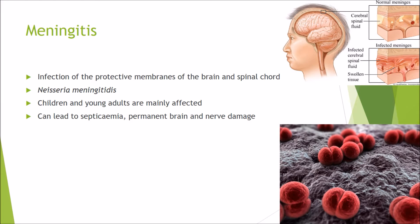This disease often affects children and young adults because their immune systems are still not fully developed and matured, making them more prone to infections. Further complications can lead to septicemia, and if left untreated, permanent brain and nerve damage. In severe cases patients have had limbs amputated because of the septicemia.